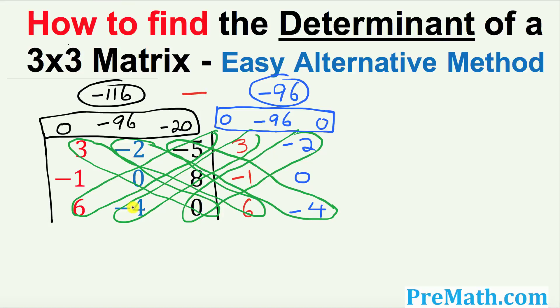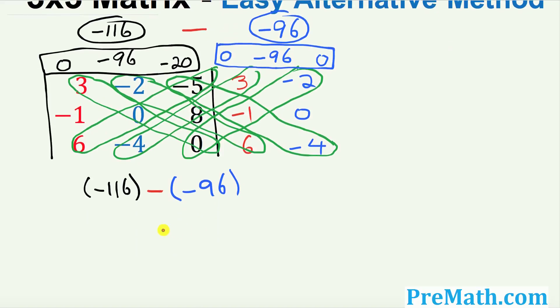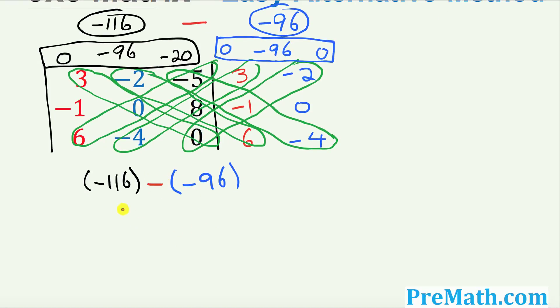I want you to put down negative 116, then put down a minus sign, and then put down negative 96 right up here. Let's go ahead and simplify. Negative and negative become positive, so this is simply going to become negative 116 and this becomes positive 96.